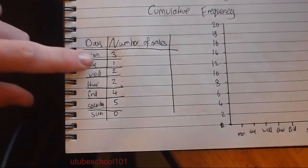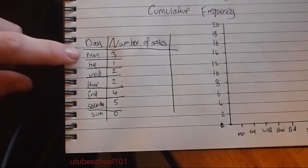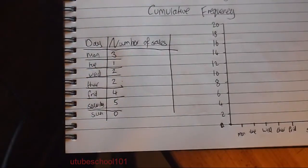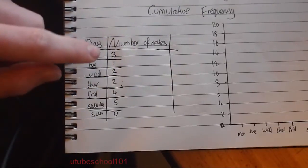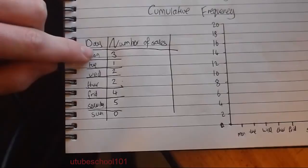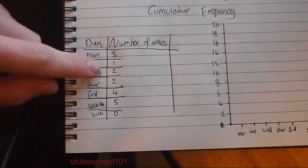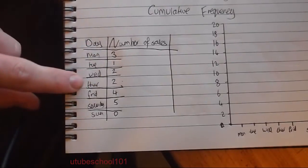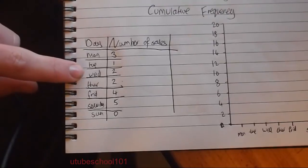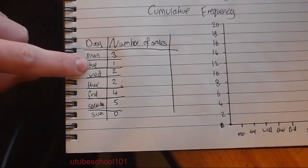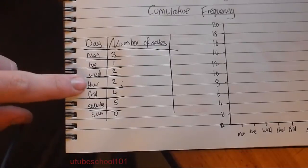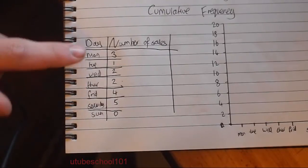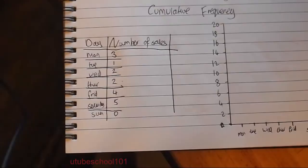What Cumulative Frequency does is it adds up the previous sale total on its own. Monday's Cumulative Frequency will be 3 because it hasn't got a previous number. However, Tuesday's will be Monday's plus itself, so it will be 4. Wednesday's will be Monday, Tuesday, and Wednesday's all added together. And Thursday's will be Monday, Tuesday, Wednesday, and Thursday's total sales added on top of each other.